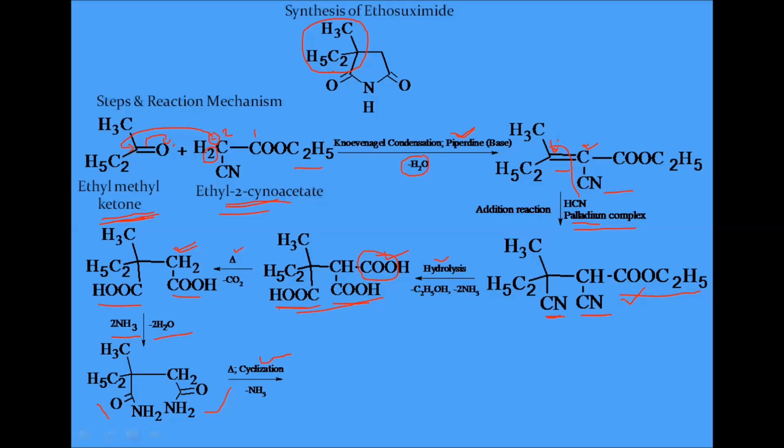And again by heating, cyclicalization process occurs and one ammonia molecule is removed. NH2 group and one H group from NH2, so ammonia is removed and NH binds with this carbon. So this ring is created. This is ethosuximide. Ethosuximide is obtained.